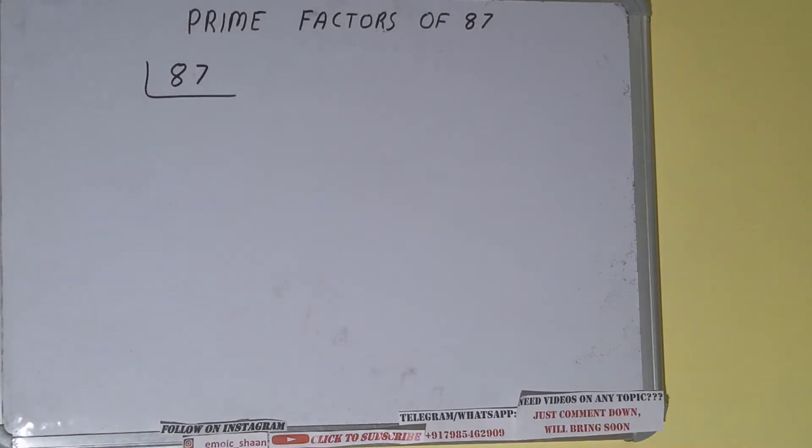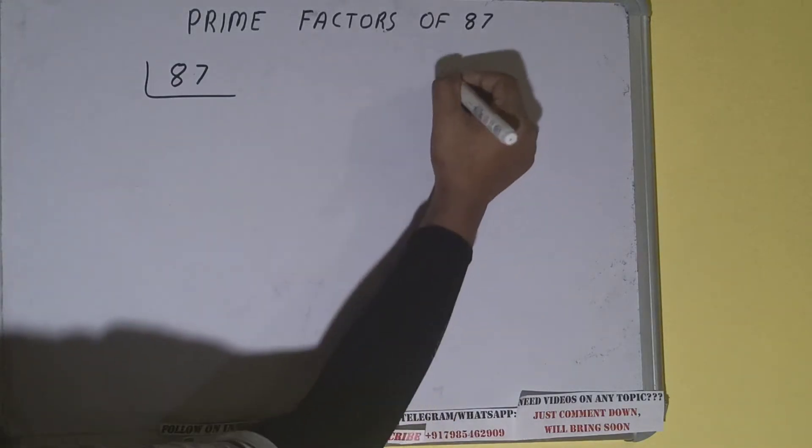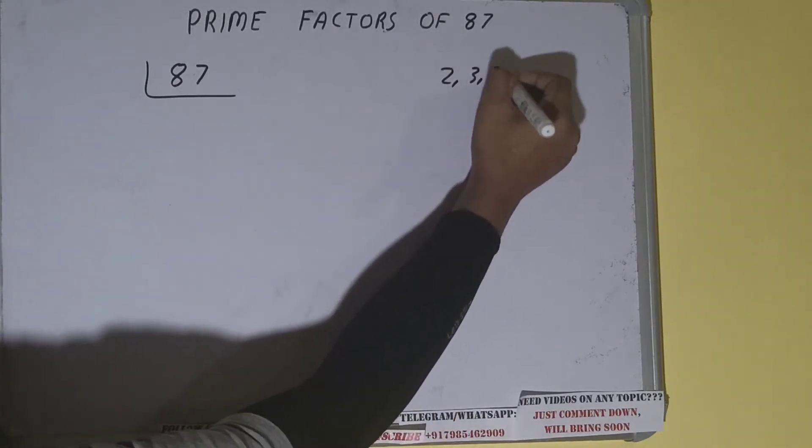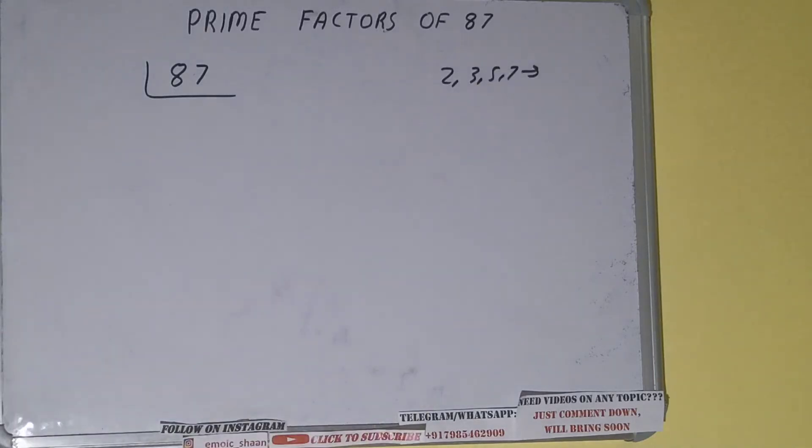...is what are prime numbers. Prime numbers are numbers that are divisible by one and the number itself, like two, three, five, seven, and so on. All right, so we'll be starting with the lowest prime number we have.